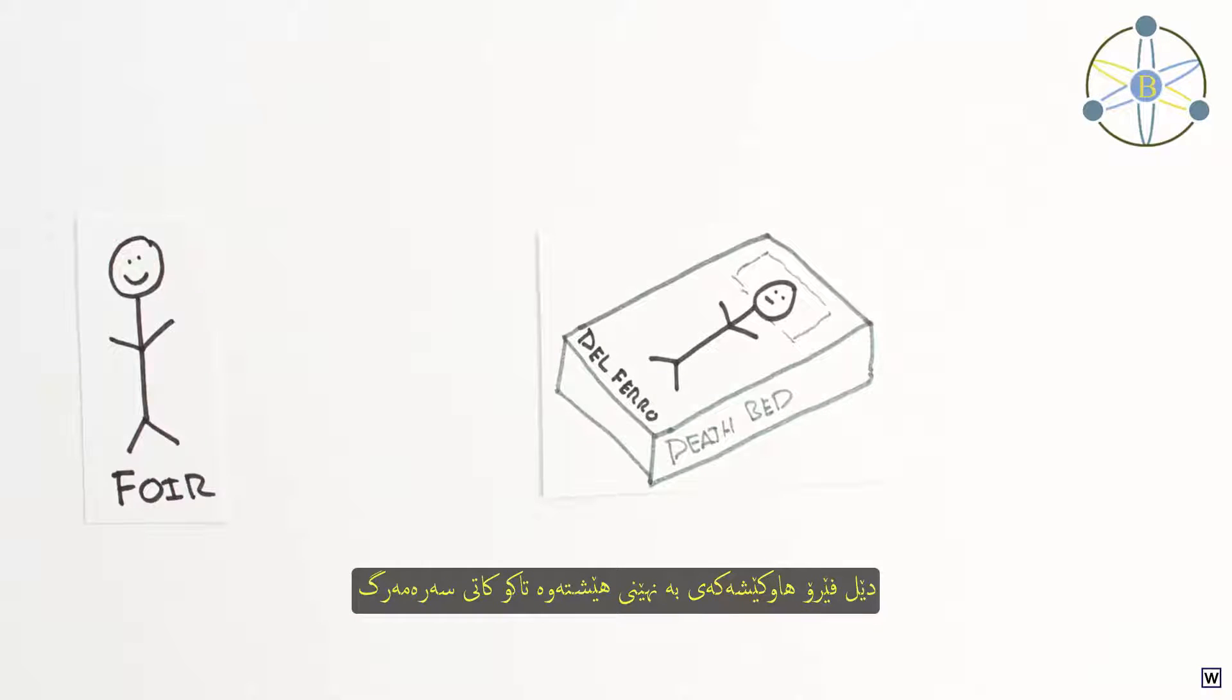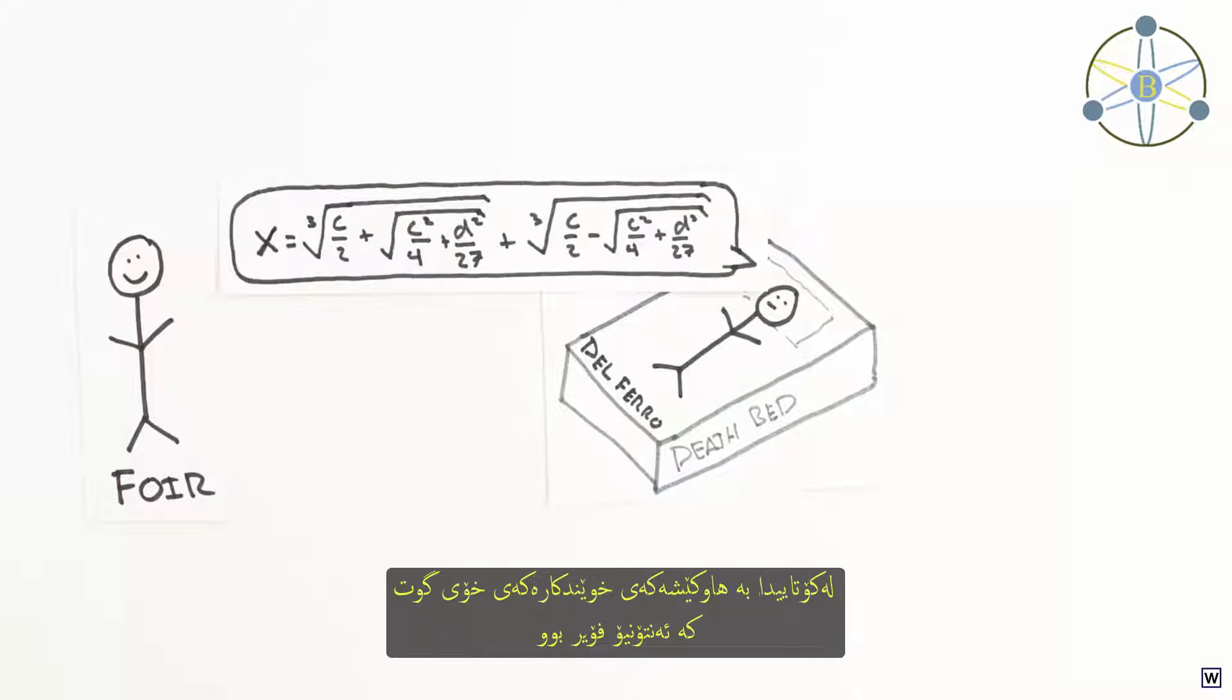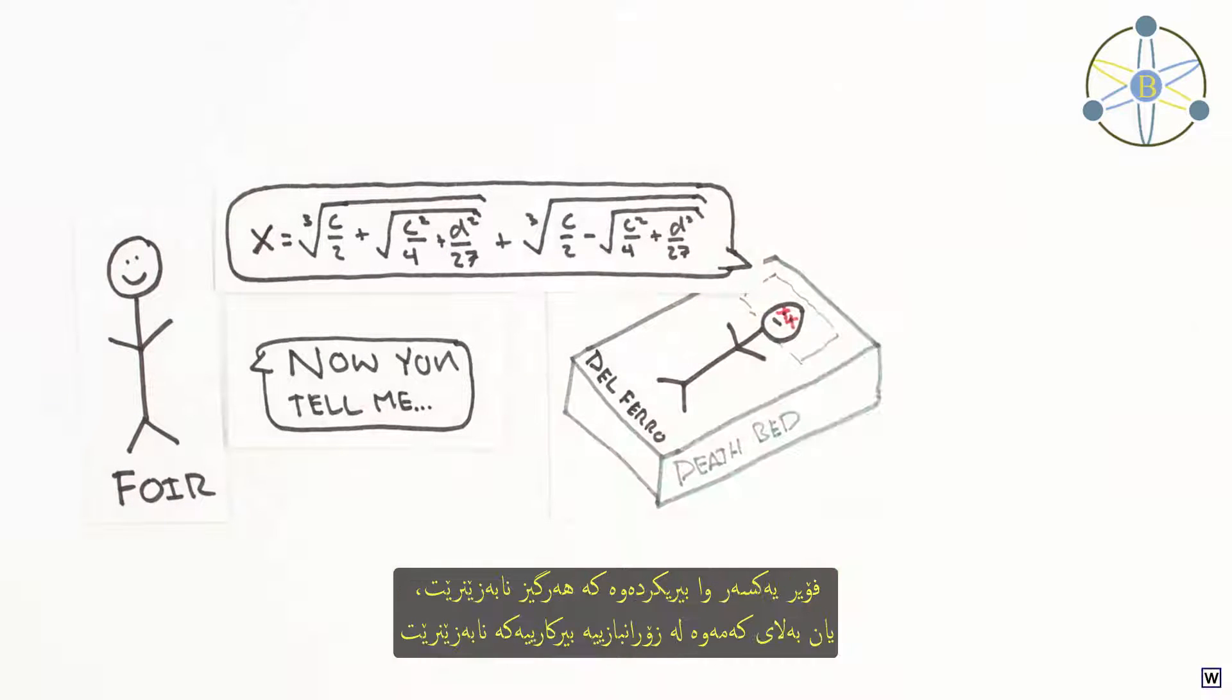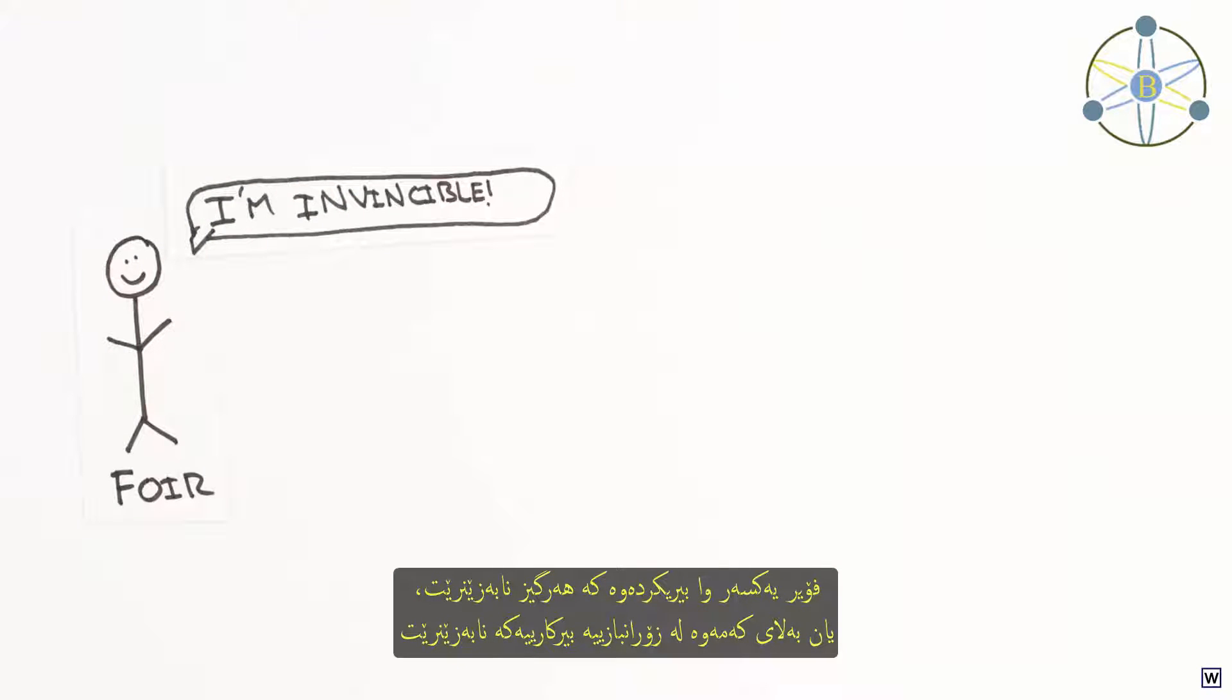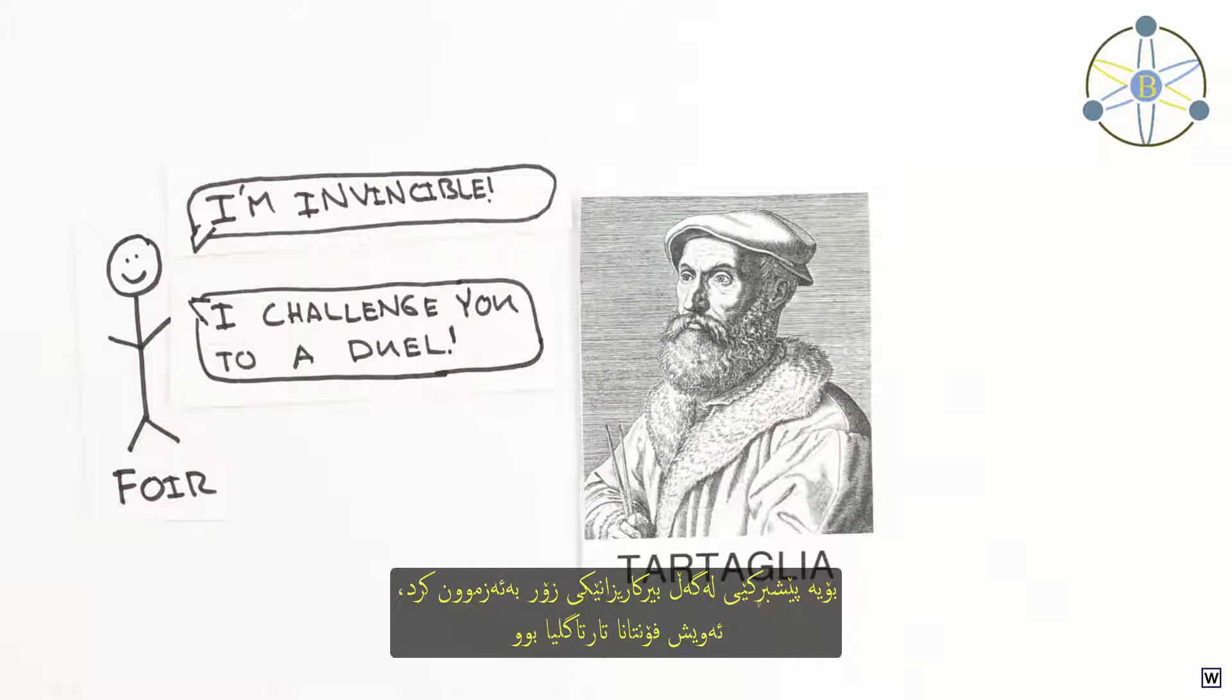What happens next is a bit of a long story. Here's the quick version. Delferro kept his formula secret until he was on his deathbed when he finally told his student Antonio Four. Four immediately thought he was invincible, or at least invincible in a math duel, and challenged a way more skilled mathematician, Fontana and Tartaglia, to a duel.